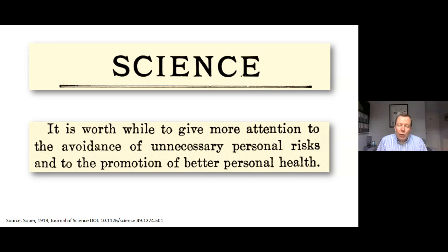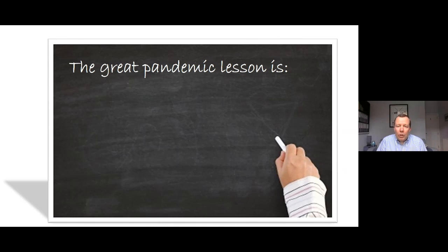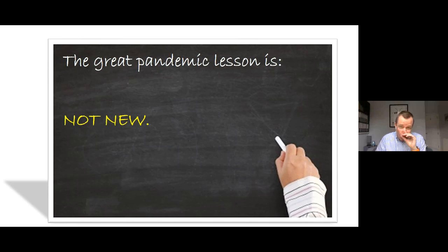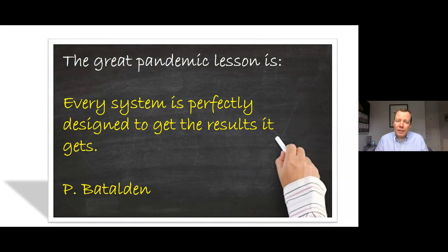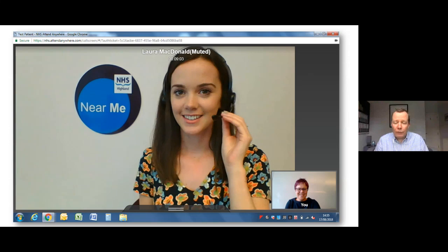Back to that science article from 1919 — inside the same document it says, 'It is worthwhile to give more attention to the avoidance of unnecessary personal risks and to the promotion of better personal health.' It turns out in summary that my great pandemic lesson is not new, and you may not be surprised to know that it is exactly what we've already discovered in quality improvement: every system is perfectly designed to get the results it gets.